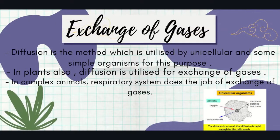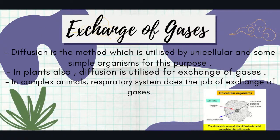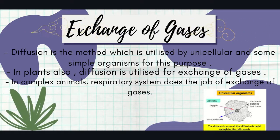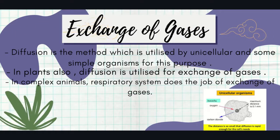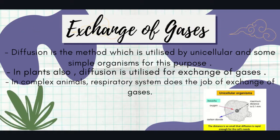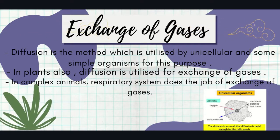How does exchange of gases occur in different organisms? Since the entire cell of a unicellular organism stays in contact with the environment, it is easier for them to exchange substances including gases. Diffusion is the method utilized by unicellular and some simple organisms for this purpose. In plants, diffusion is also utilized for exchange of gases. In complex animals such as humans, the respiratory system does the job of exchange of gases.